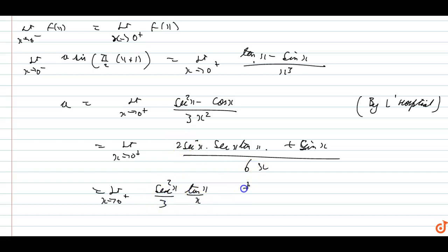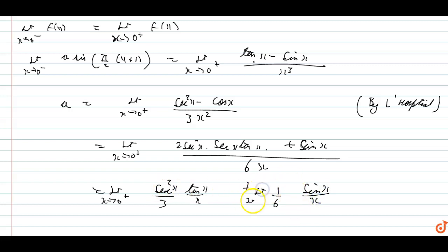After applying L'Hôpital's rule and simplifying, we get terms involving tan x upon x, with a factor of 1 upon 3, plus 1 by 6, multiplied by sin x upon x.